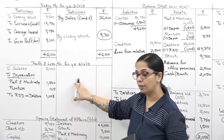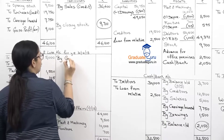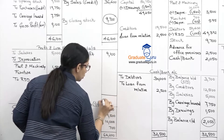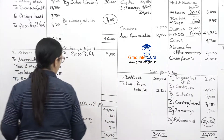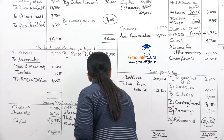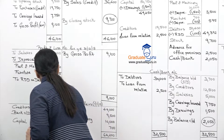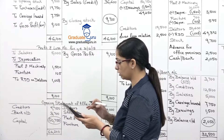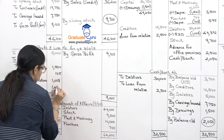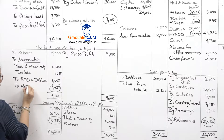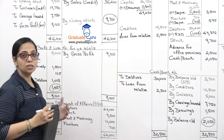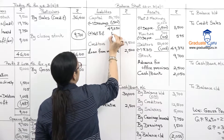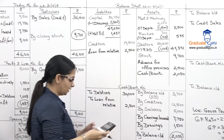Gross profit of 9,100 is brought down to P&L. Now we close P&L: total is 9,100 on both sides. Subtracting expenses: salaries 5,000 + depreciation plant 1,500 + depreciation furniture 105 + RDD 1,008. Net profit = 9,100 − 7,613 = 1,487. This is added to capital in the balance sheet: 49,250 + 1,487 = 50,737.